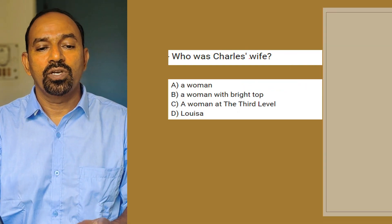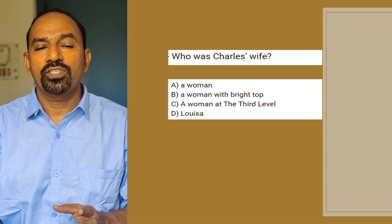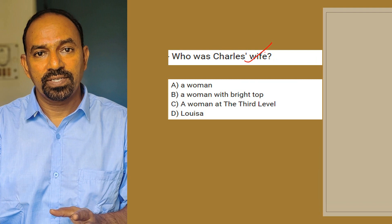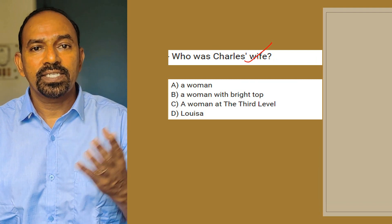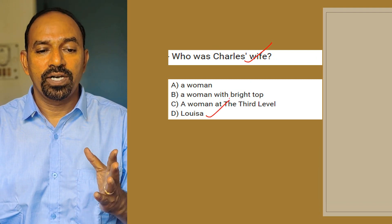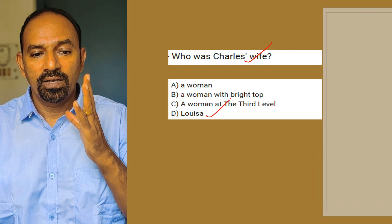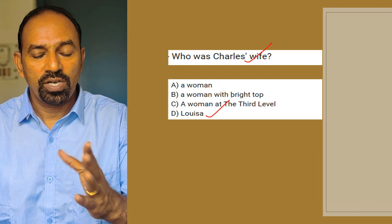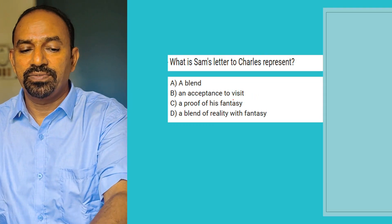Next question: Who was Charlie's wife? This is a direct factual question. Louisa was Charlie's wife.